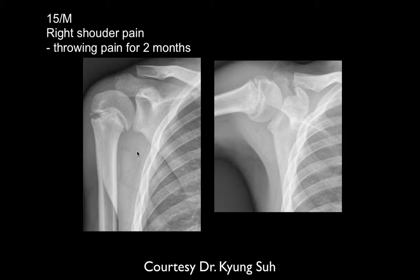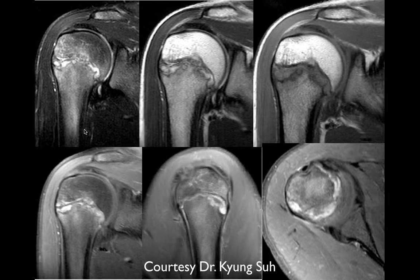The problem is convincing parents to let the kid stop playing. Most kids want to stop if it hurts — it's really the parents and coaches that are the problem. Here's a 15-year-old male with right shoulder pain especially with throwing for two months. The plain films show marked thickening of the growth plate, marked irregularity with telltale calcification. On MRI the growth plate is grossly abnormal, with a large fluid collection and very irregular margins.